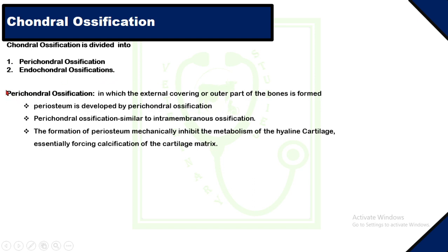Chondral ossification is divided into two types: perichondral ossification and endochondral ossification. In perichondral ossification, the external covering or outer parts of bones are formed — that is, the periosteum is developed by perichondral ossification. Perichondral ossification is similar to intramembranous ossification in its process. The formation of periosteum mechanically inhibits the metabolism of hyaline cartilage, which is the precursor of the long bone, essentially forcing calcification of the cartilage matrix.